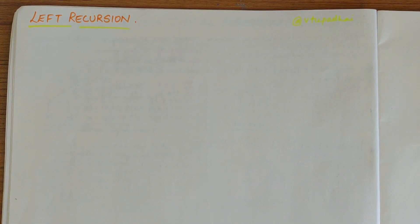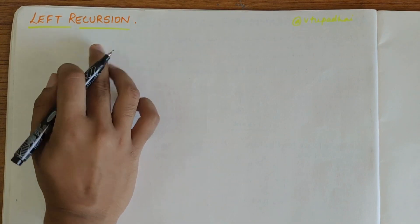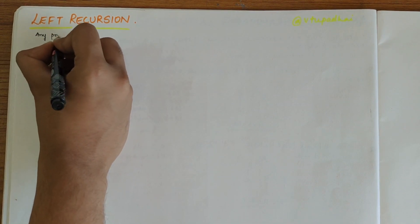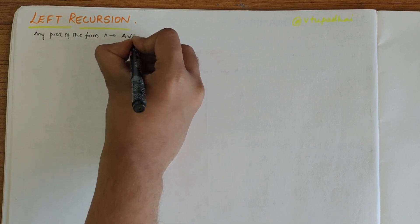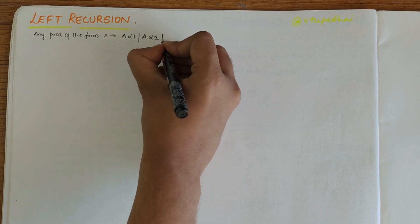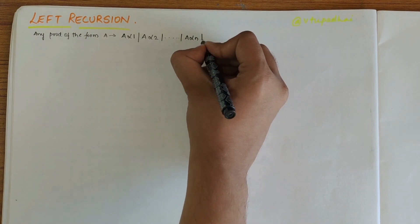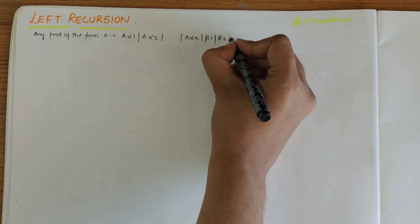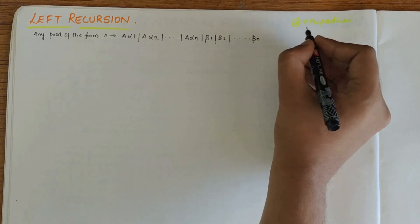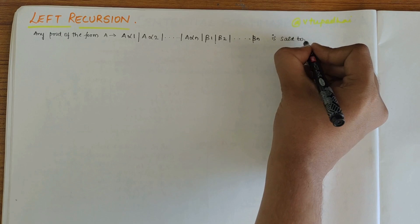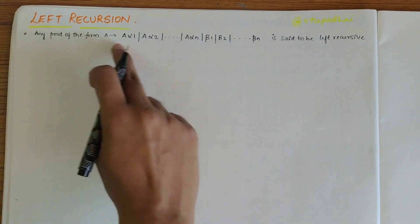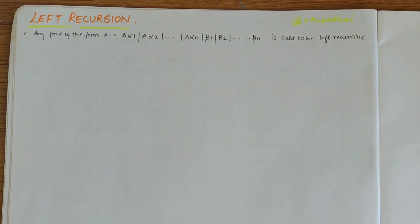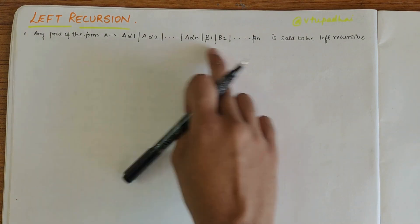In this video we'll be looking into the left recursion topic and solve some basic problems related to it. Firstly, understanding the definition of left recursion: any production of the form A derives A-alpha-1, A-alpha-2, ... A-alpha-n and beta-1, beta-2, ... beta-n is said to be left recursive.